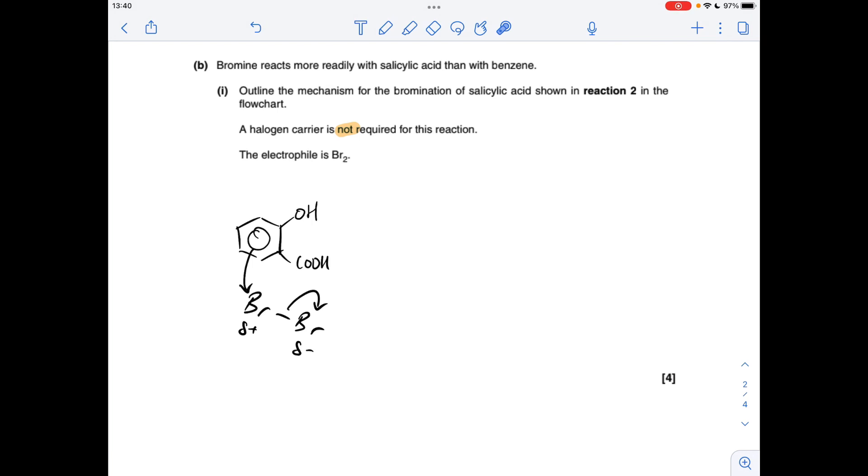Part B now, the mechanism for the bromination of salicylic acid as per reaction two. Importantly it says the reaction does not need a halogen carrier and the electrophile is BR2. So what that means is the bromine molecule is going to accept a pair of electrons, that's what electrophiles do. So where do the electrons come from?